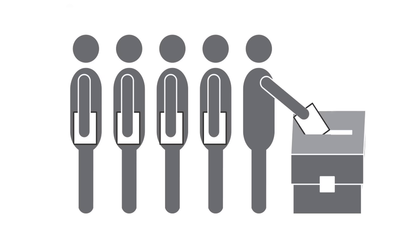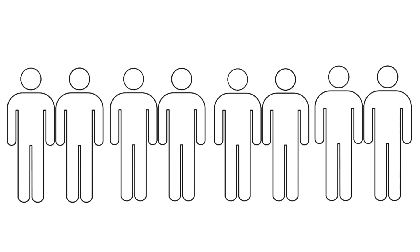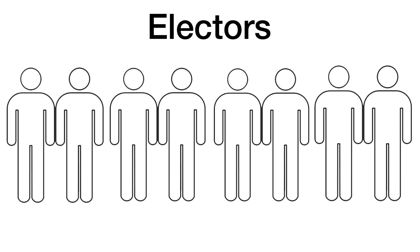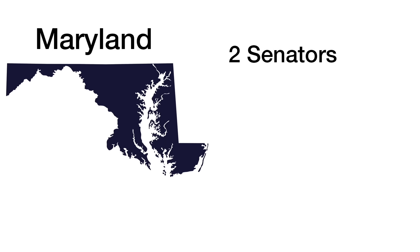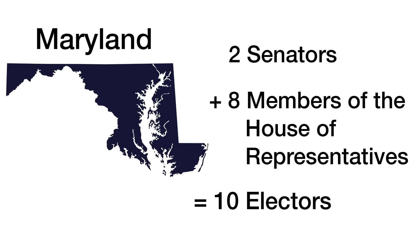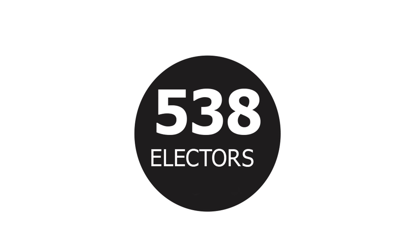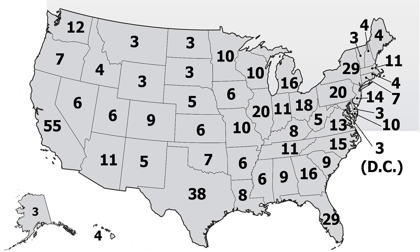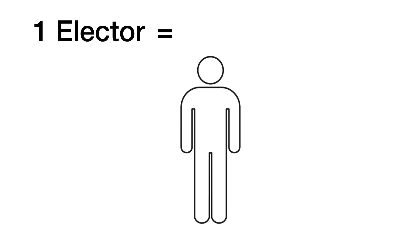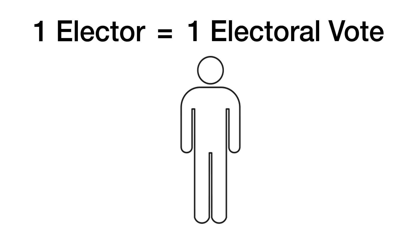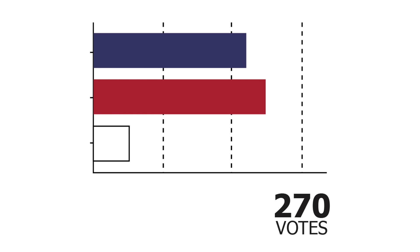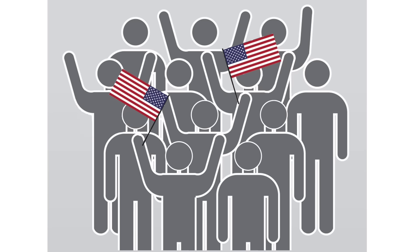When people cast their vote, they are actually voting for a group of people called electors. The number of electors each state gets is equal to its total number of senators and representatives in Congress. A total of 538 electors form the Electoral College. Each elector casts one vote following the general election, and the candidate who gets 270 votes or more wins.